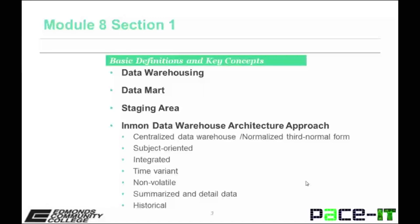A data mart is the access layer of the data warehouse environment to get the data out to the users. It is usually oriented to a specific business function or subject area. A staging area is where the source data is brought in, transformed, and cleansed, then loaded to the data warehouse or mart. The Inman data warehouse architectural approach includes a centralized, third-normal form data warehouse with dependent data marts.